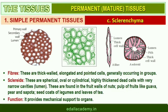The fibers are thick-walled, elongated and pointed cells, generally occurring in groups in various parts of the plant. The sclereids are spherical, oval, or cylindrical, highly thick and dead cells with very narrow cavities called lumen. These are commonly found in the fruit walls of nuts, pulp of fruits like guava, pear, seed coats of legumes, and leaves of tea. Sclerenchyma provides mechanical support to organs.